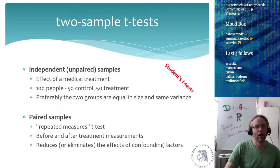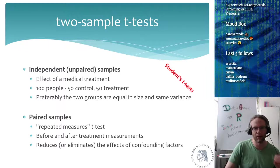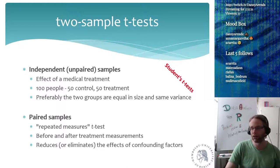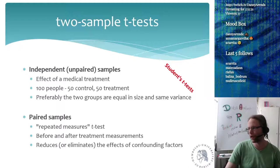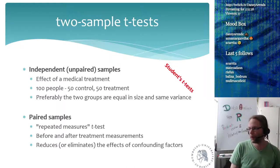When we talk about two-sample t-tests, we're comparing two groups. We have the independent and unpaired samples — this is the real original Student's t-test. For example, to look at the effect of a medical treatment, we recruit a hundred people and randomly assign 50 to the control group and 50 to the treatment group. Preferably the two groups are equal in size and have the same variance. If the two groups show a large difference in variance, you have to compensate for that — in R this means setting the var.equal parameter to false.